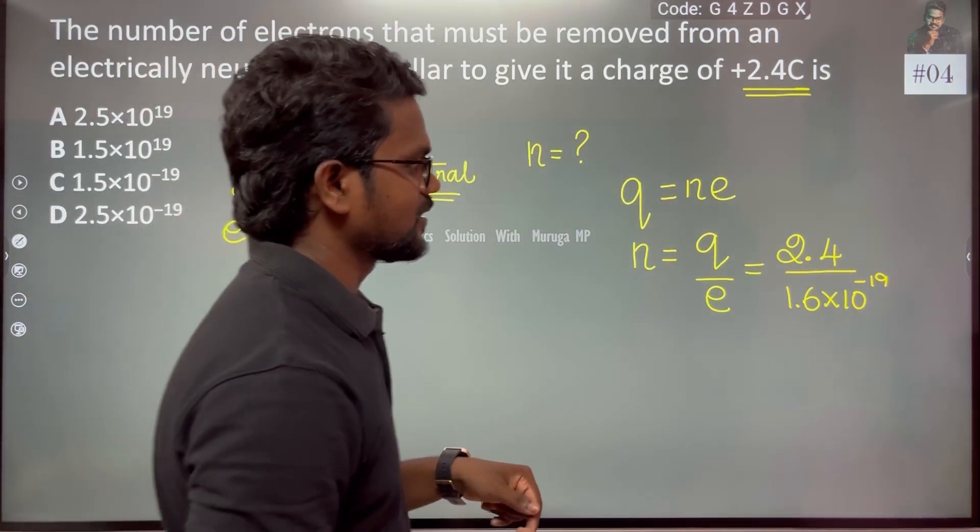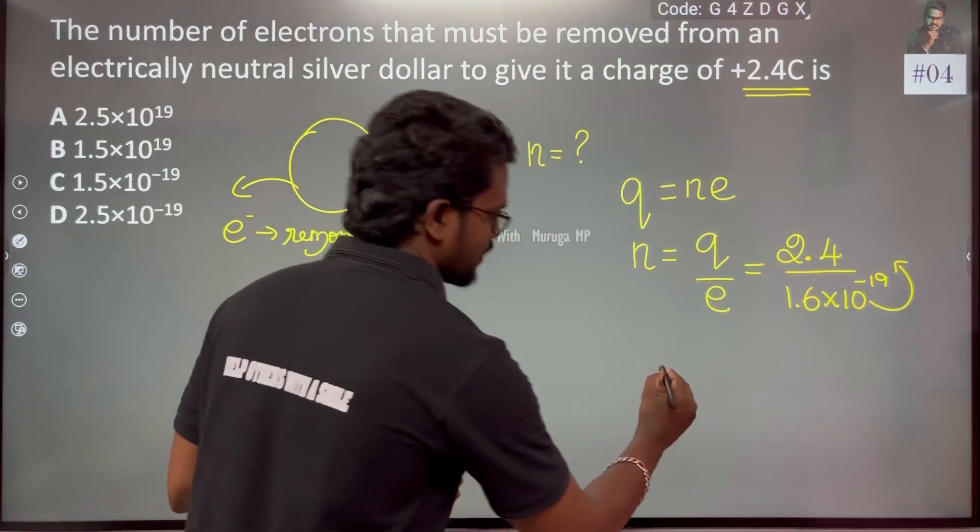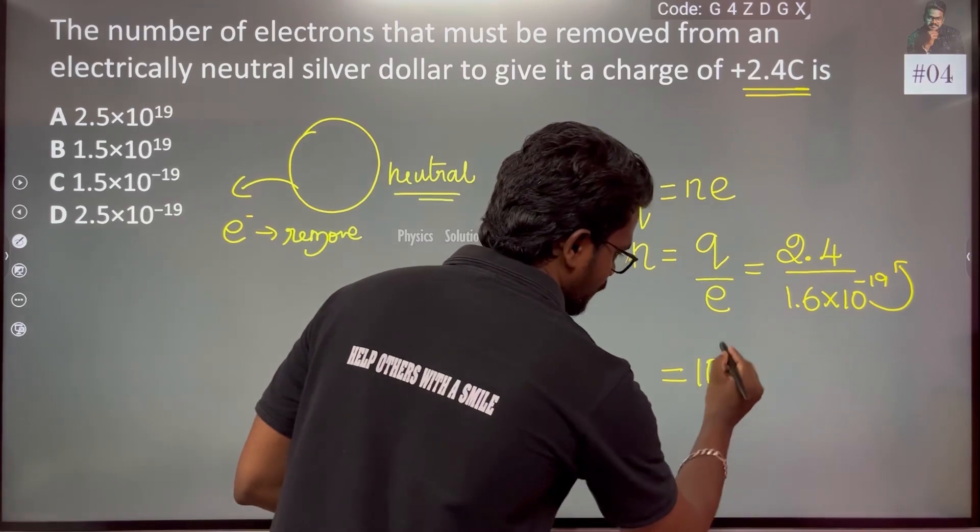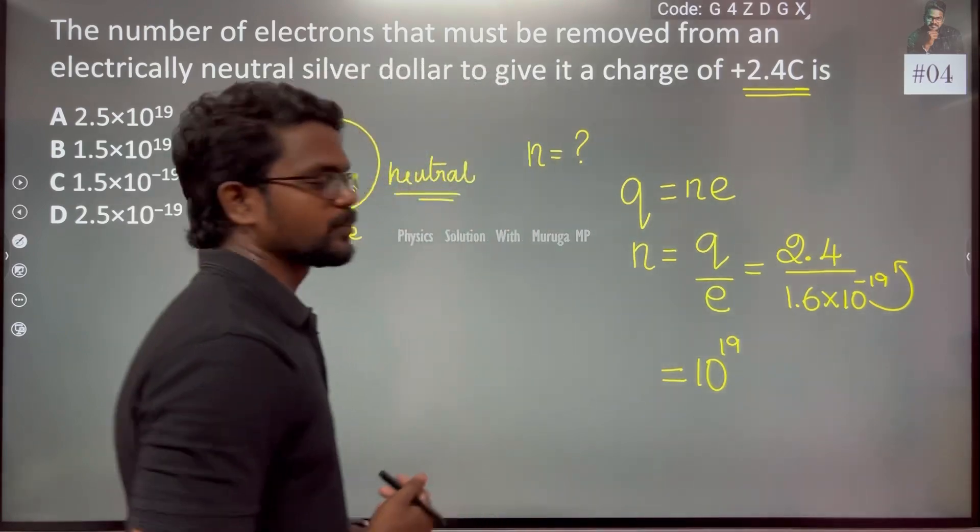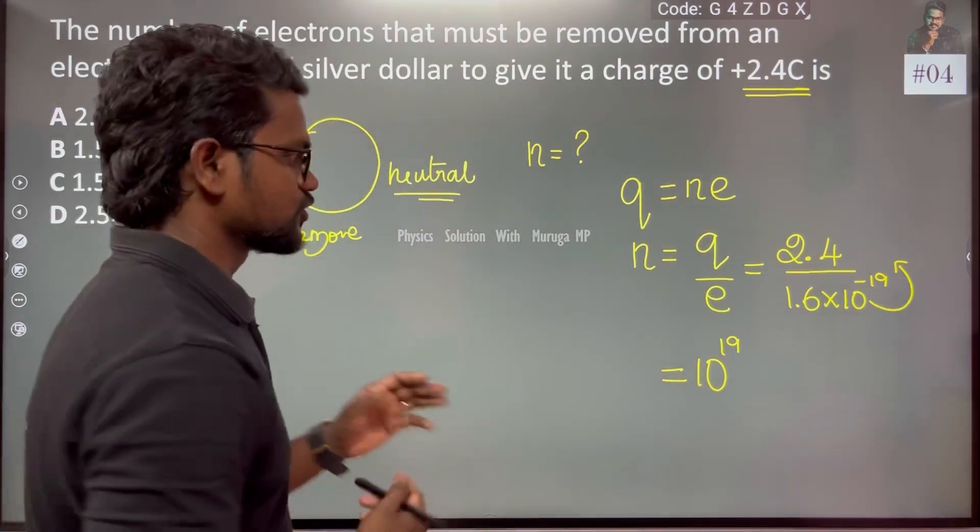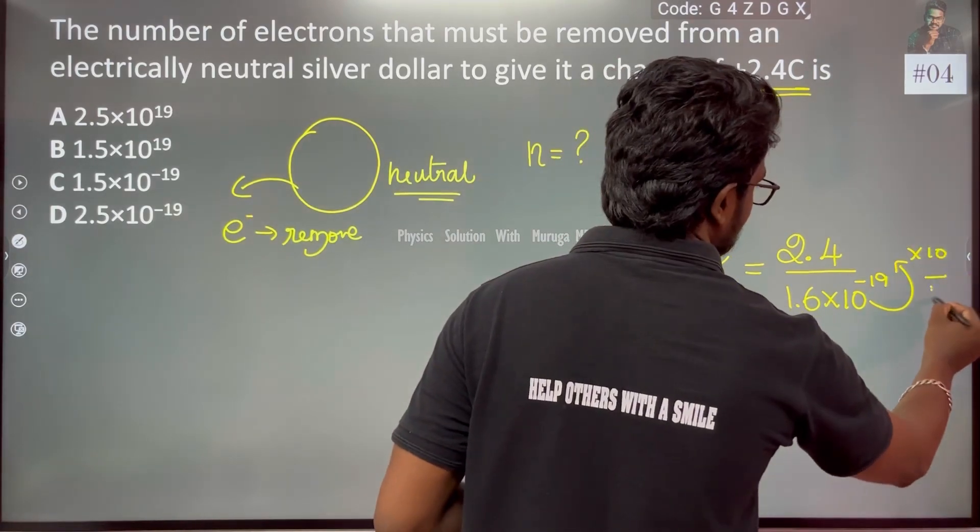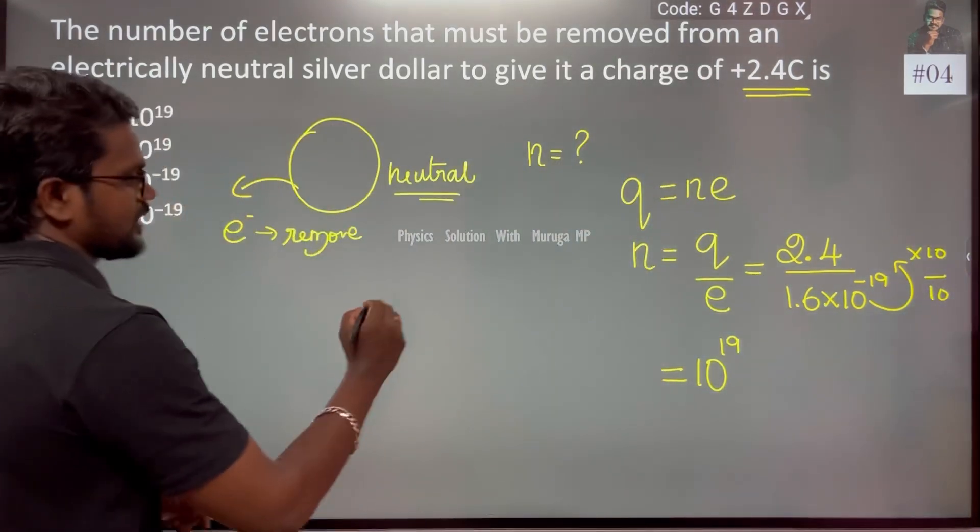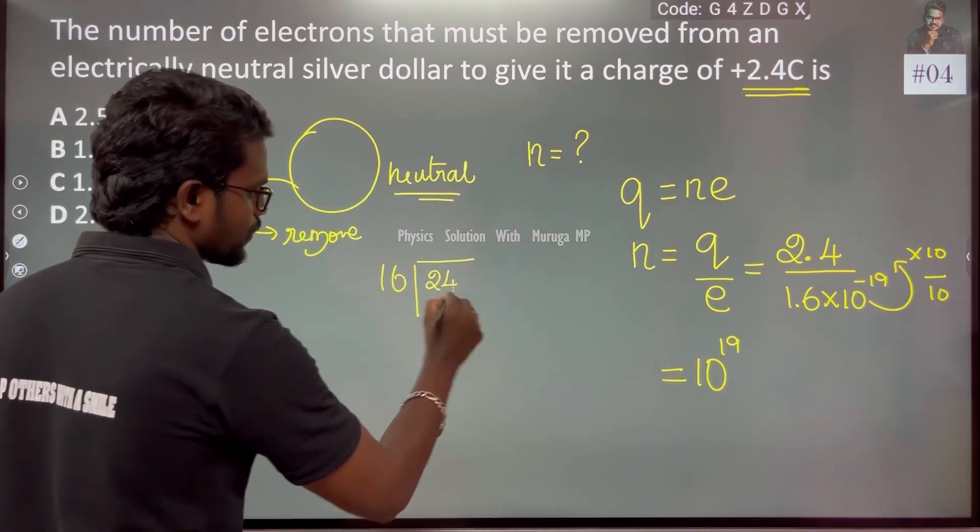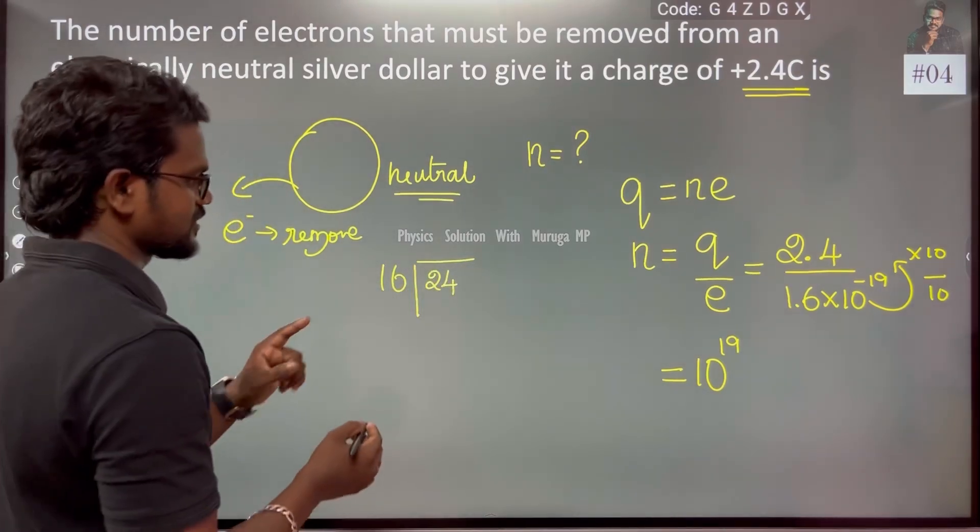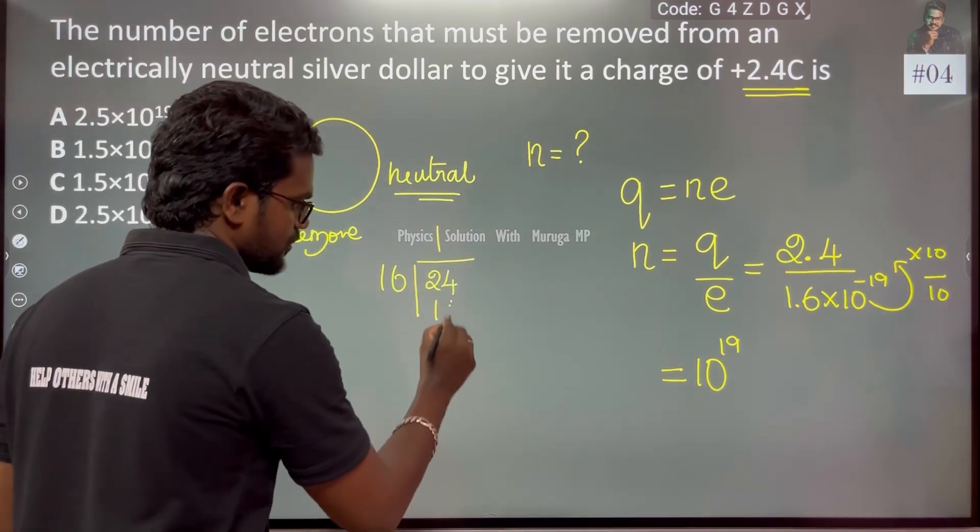This is general calculation. First we simplify the power. 2.4 divided by 1.6. 2.4 divided by 10, that becomes a whole number. 16 and 24, divide: 16 times 2 is 32. Obviously one time goes, that is 16.